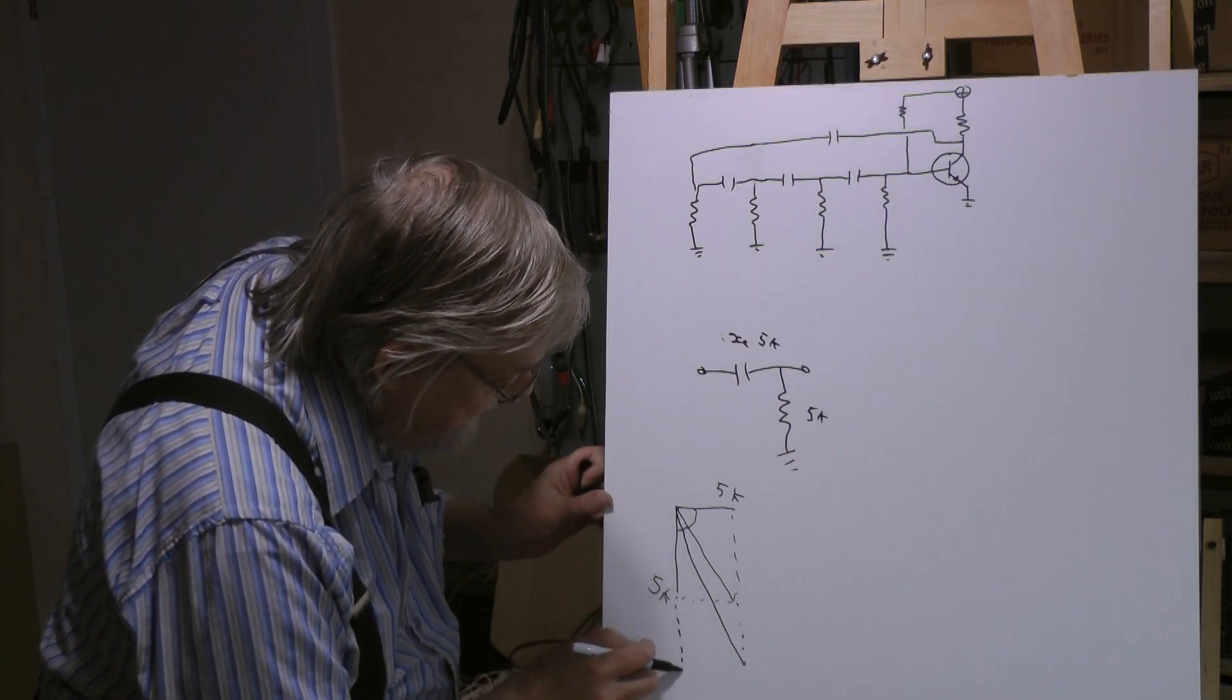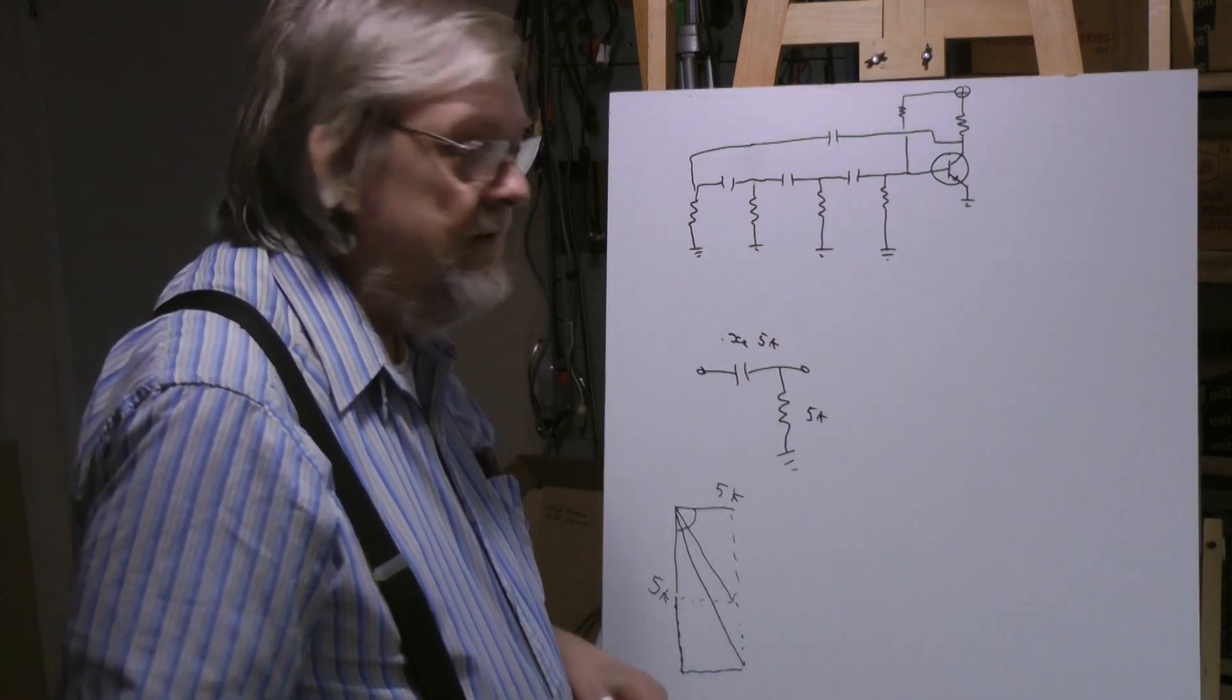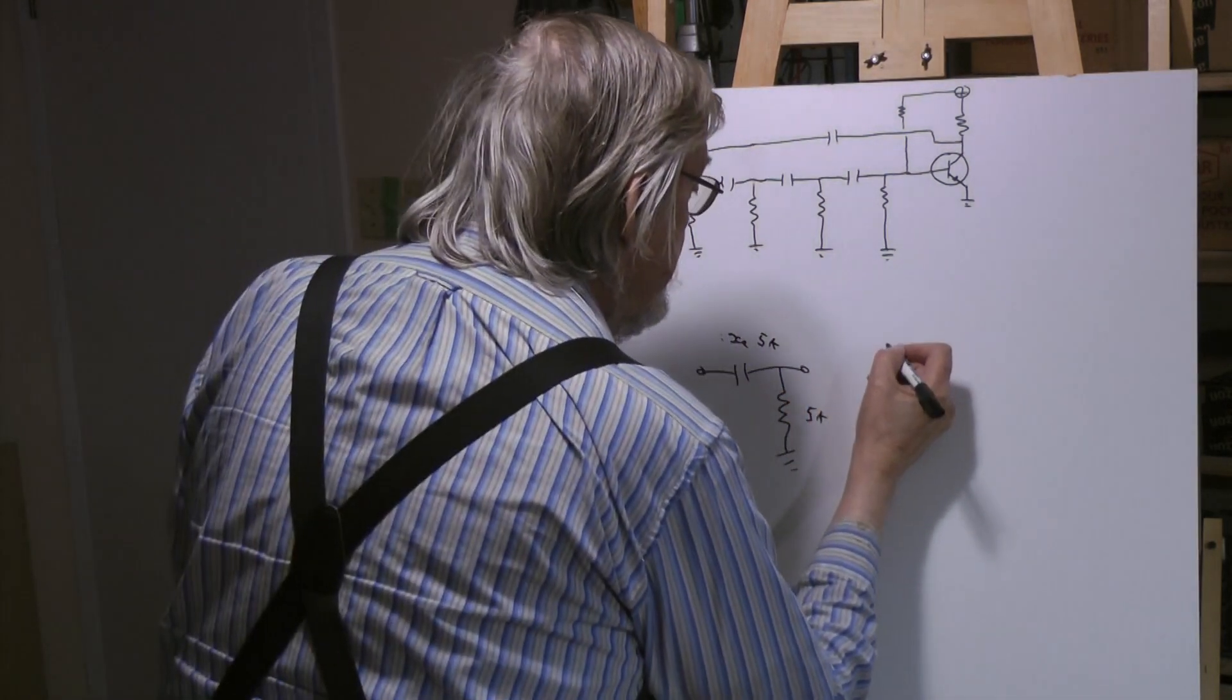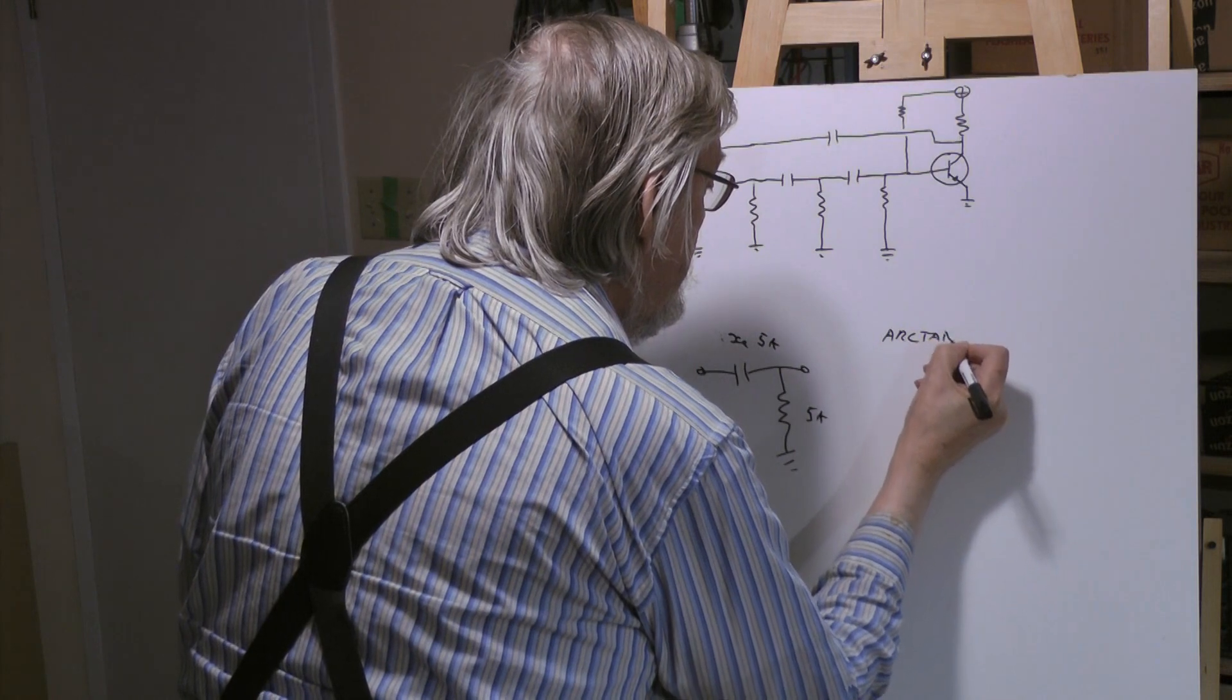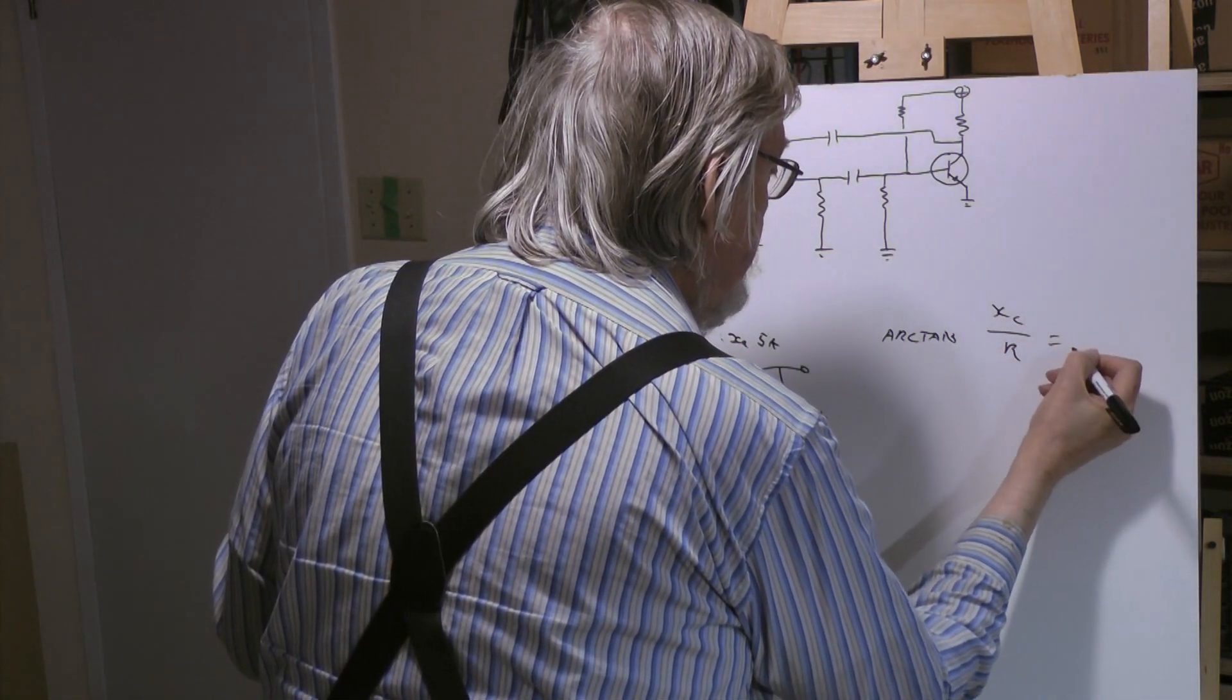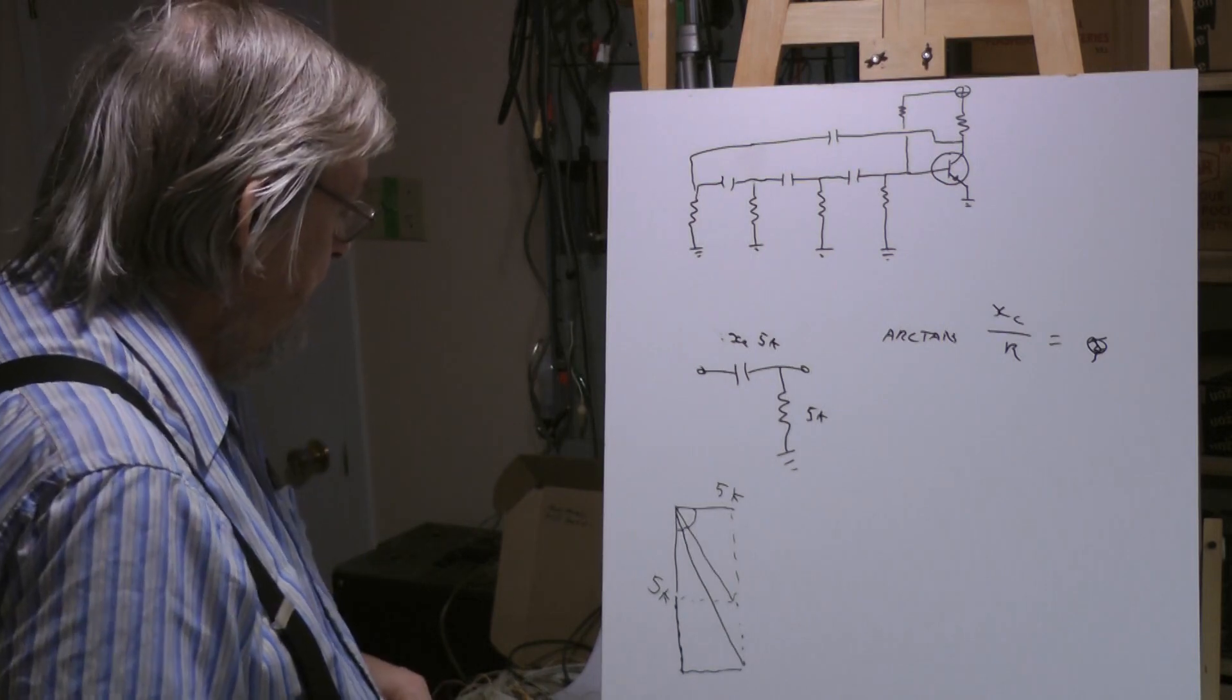What you want really instead of 45 is you want 60 degrees right. So you want a capacitor that has a reactance down here. But how do you figure that out? That's not too hard. As far as I know the formula is arctan XC over R to give you your phase angle.